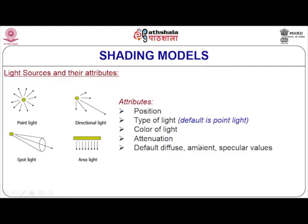Once the shading models are done, we can also define light sources in the 3D world. There are four types of lights: point light, directional light, spot light, and area light. Light has properties such as direction, attenuation — a distance after which light intensity dies — and properties like diffuse, ambient, and specular. The color of the light is also an important factor.